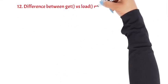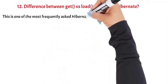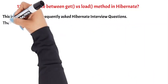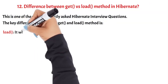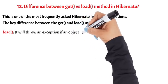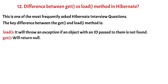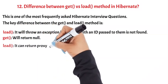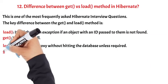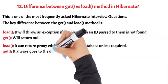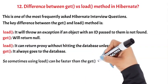Question 12: Difference between get and load method in Hibernate. This is one of the most frequently asked Hibernate interview questions. The key differences are — Load: It will throw an exception if an object with the ID passed to it is not found. Get: Will return null. Load: It can return a proxy without hitting the database unless required. Get: It always goes to the database. So sometimes using load can be faster than the get method.